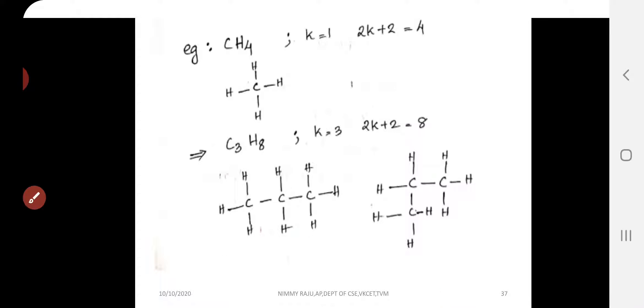For k=3, the number of hydrogen atoms is 2(3)+2 = 8, giving C₃H₈.